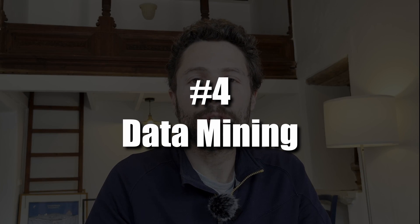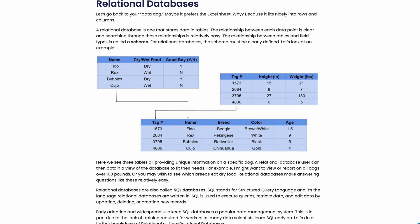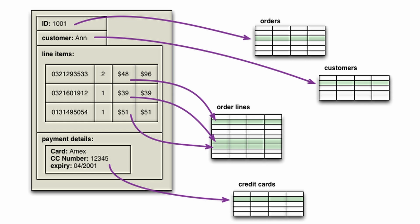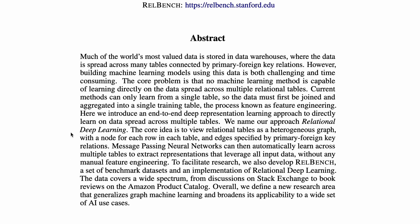Another exciting application area for graph neural networks is data mining. Most organizations store their key business data in relational databases, where information is spread across multiple linked tables. Traditionally, machine learning on this data required manual feature engineering to first aggregate the data from all relevant tables into a single table before modeling — a process that is time-consuming and easily loses information. Recently, researchers proposed a new approach called relational deep learning, that leverages GNNs to learn useful patterns and embeddings directly from a relational database without any feature engineering.